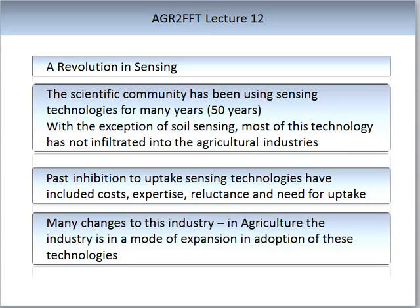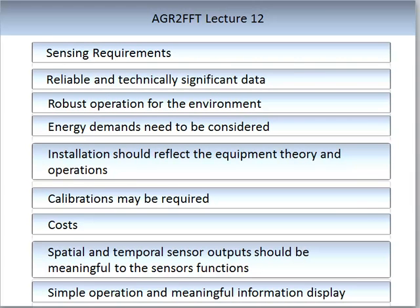You are learning about sensors at a very exciting time in agriculture. The ideal requirements for any given sensor include: it needs to be reliable in the environment it's placed in; it needs to output technically significant data; it needs to be robust, meaning it can work in a farm environment; and its energy demands need to be considered, as this is currently one of the major problems with sensors.